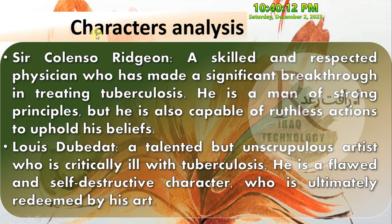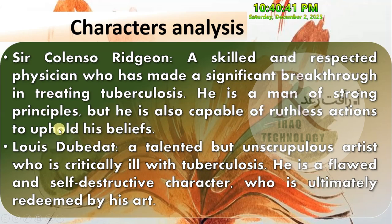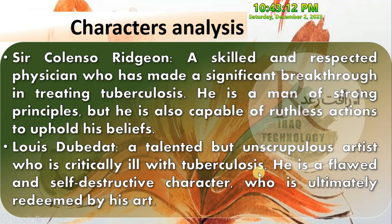Now we are going to talk about the character analysis. Sir Colenso Ridgeon is a skilled and respected physician who has made a significant breakthrough in treating tuberculosis. He is a man of strong principles, but he is also capable of ruthless actions to uphold his beliefs. Louis Dubedat is a talented but unscrupulous artist who is critically ill with tuberculosis. He is a flawed and self-destructive character who is ultimately redeemed by his art.